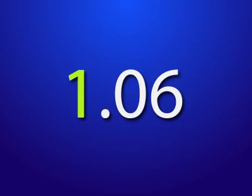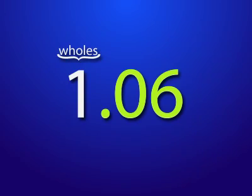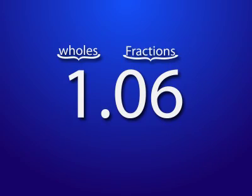When you read decimal numbers, the digits on the left side of the decimal point tell about the number of wholes. The digits on the right side tell about the fraction or part that's added to the wholes. One and six hundredths is one whole and six hundredths more.